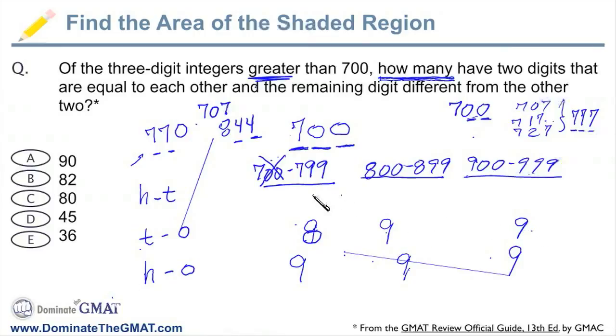And how about the hundreds and the tens? We have 770, 771, 772, 773, 774—everything except for 777. So there's going to be 9 of those. Sure enough, the same thing here, 9 of those.